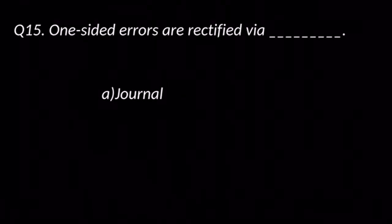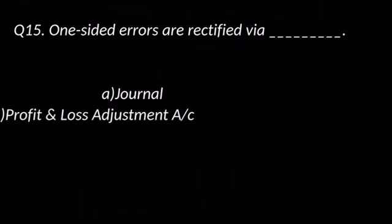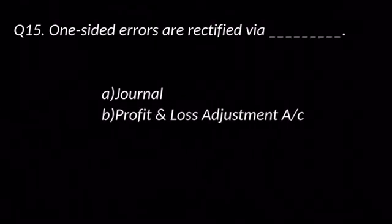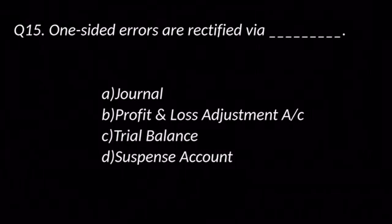Question number fifteen: One-sided errors are rectified via — options are: A. Journal, B. Profit and loss adjustment account, C. Trial balance, D. Suspense account. The answer is D: Suspense account.